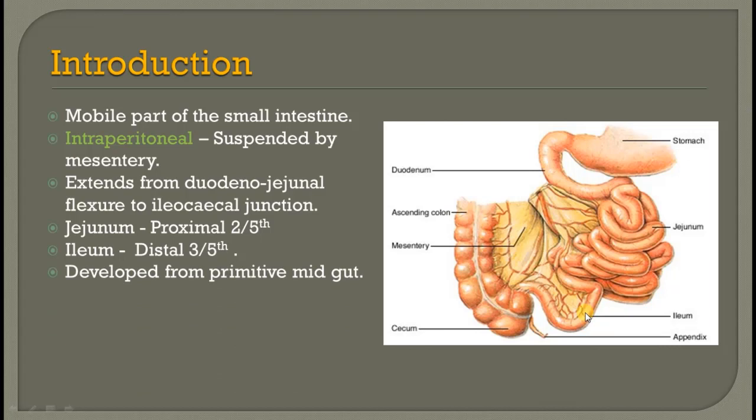It is mainly developed from the primitive mid-gut. The mid-gut derivatives are actually from the lower part of the second part of the duodenum, then the remaining second, third and fourth part of the duodenum.